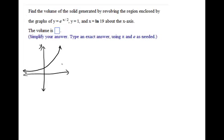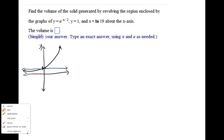So it looks like y equals e to the x over 2. This affects it in a minor way. y equals 1. We know that this crosses at 1. So y equals 1 would be that. And x equals the natural log of 19 is just some vertical line. We'll call it right about there.